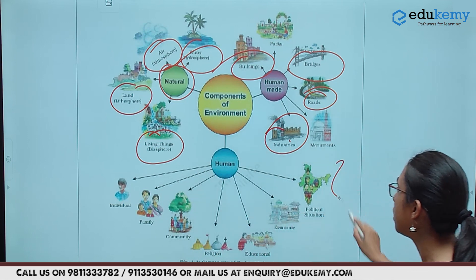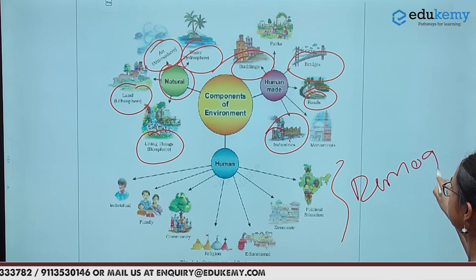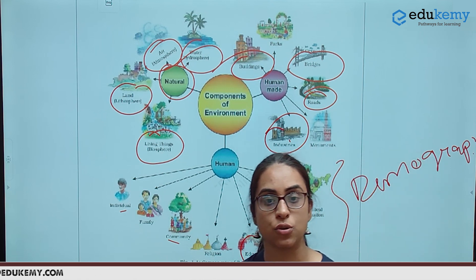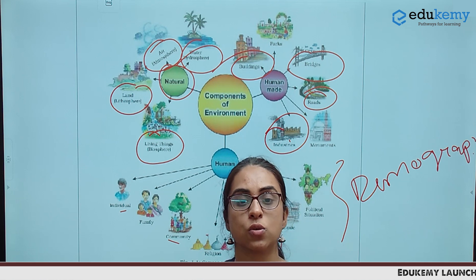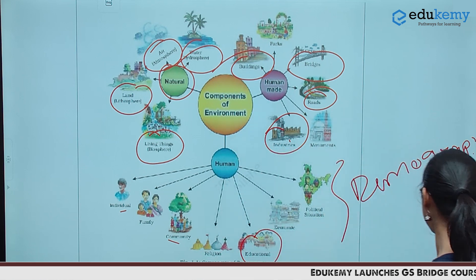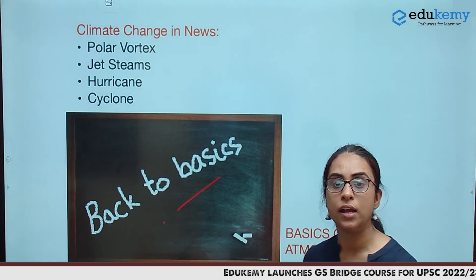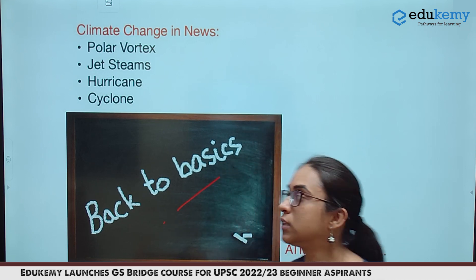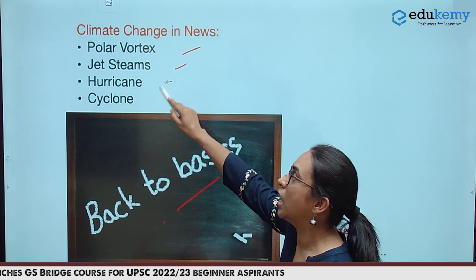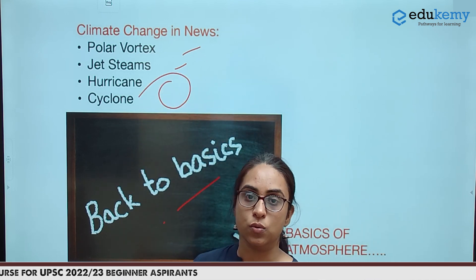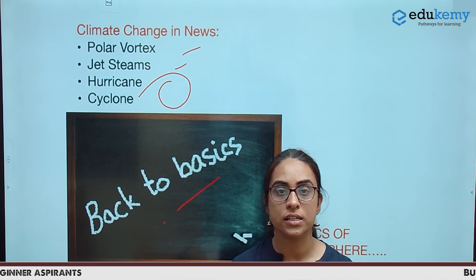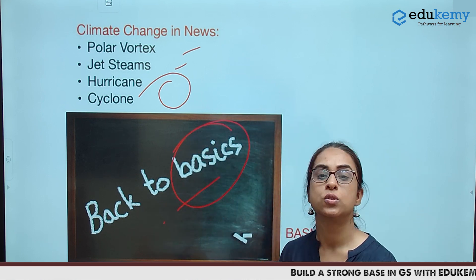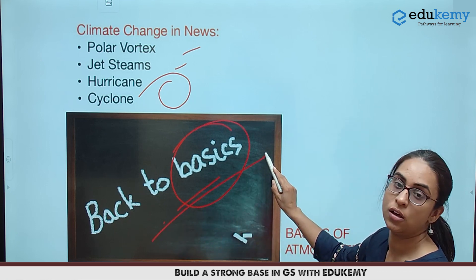Apart from it, the demographic aspects like the individual, the community, the education, the sex ratio, the literacy ratio — this all is also studied in geography. And also the current related aspects. Presently, phenomena like the polar vortex, the jet stream, hurricanes, and cyclones are in news. But a student would find it difficult to understand these things unless the basics are in place. So the theme of the GS Bridge course is: back to the basics.